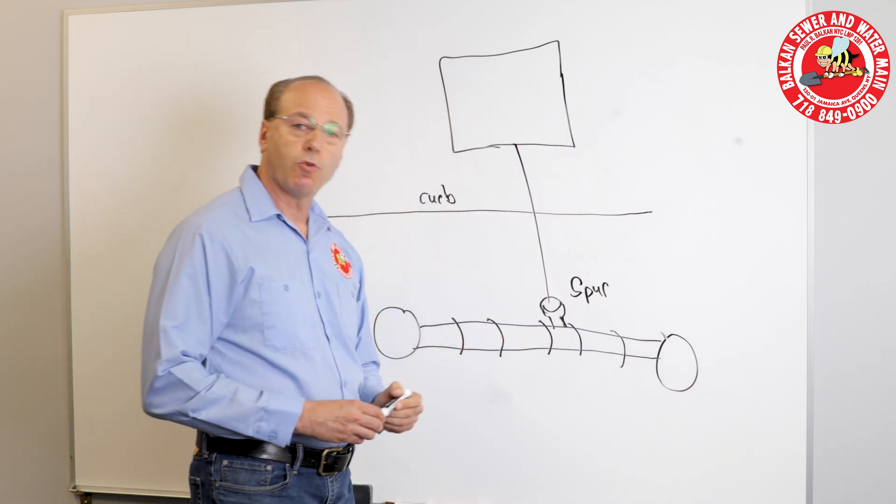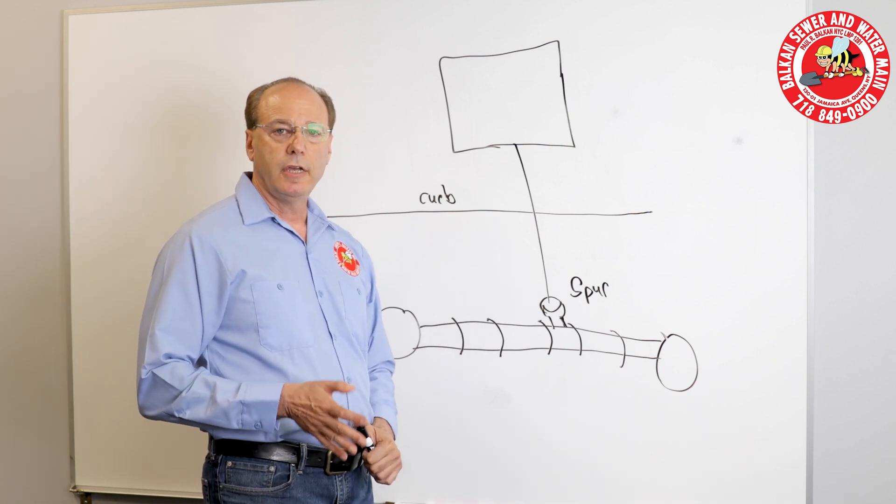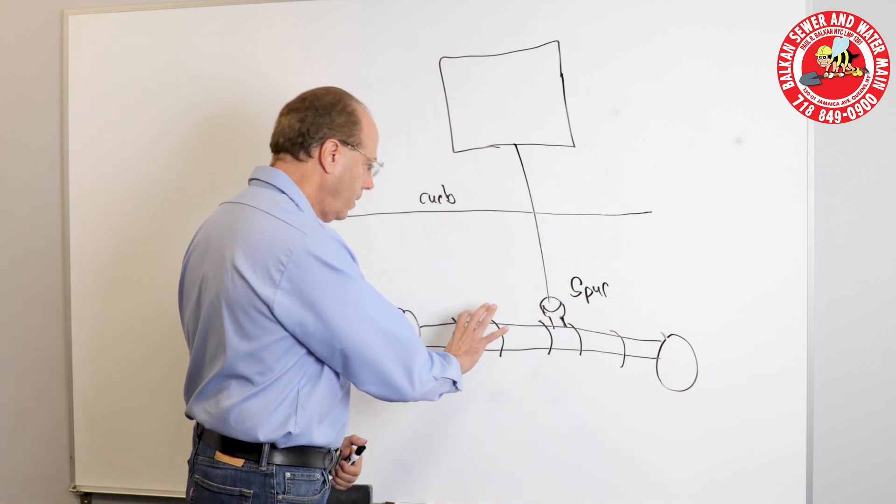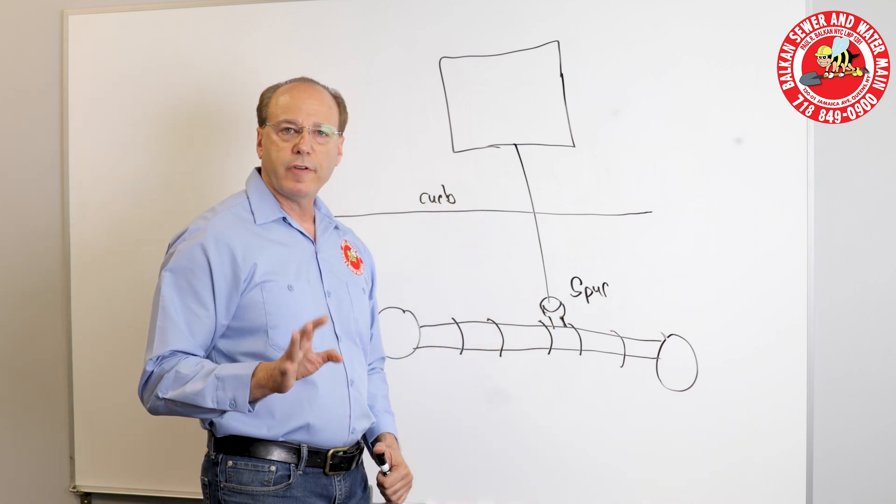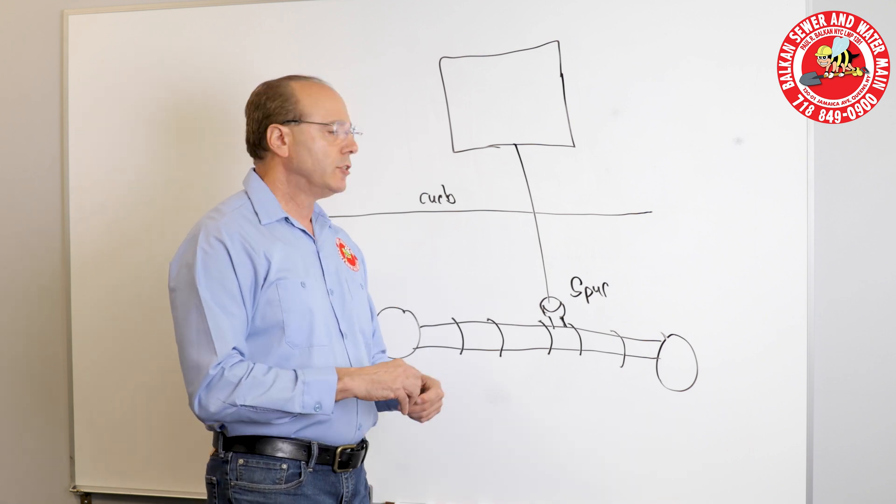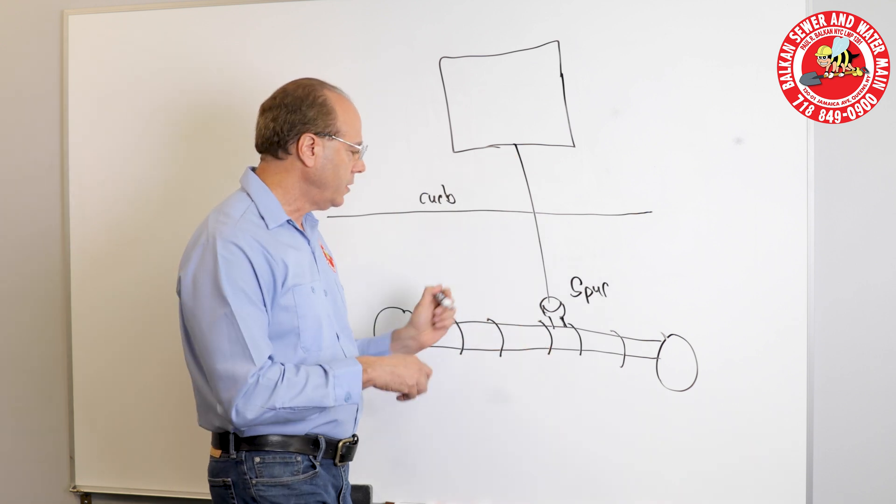Now, if you're really lucky and fortunate, you'll have a curb connection. If the city installs a new sewer down the street, it is very common that they will leave a connection at the curb line to save you, the owner, the cost of going all the way into the street.